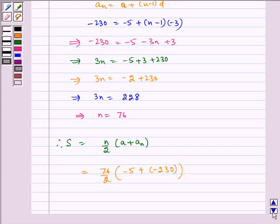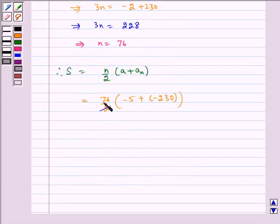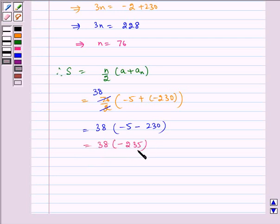Now solving this we get this gets cuts, so we get here 38. So it is equal to 38 multiplied by minus 5 minus 230, which is equal to 38 multiplied by minus 235 which is equal to minus 8930. Therefore the required sum is minus 8930.